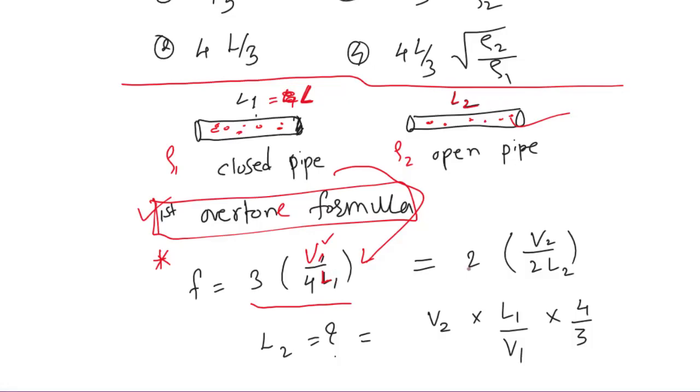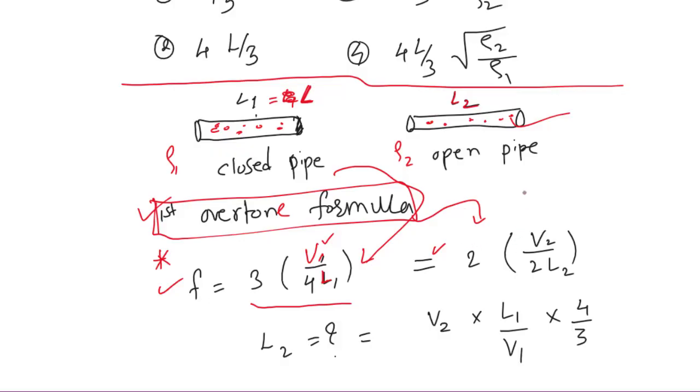What they are saying is this frequency is equal to the first overtone frequency of the open pipe as well. First overtone frequency of the open pipe is given by 2 times V₂ divided by 2L. Let's take the velocity as V₂, length of that pipe is L₂—this is what we have to calculate. These frequencies are equal, so we can equate these two equations.